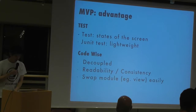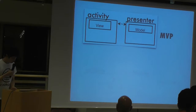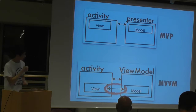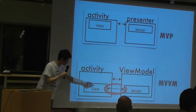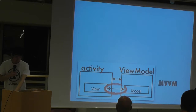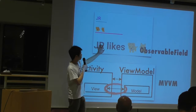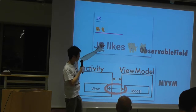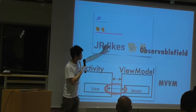Next, let's compare MVP to MVVM. In MVP you have the presenter; in MVVM, the only difference is that the view and the view model are bound together. When you update the output, the view gets reflected directly. This can be done two ways: direct Java, or data binding.